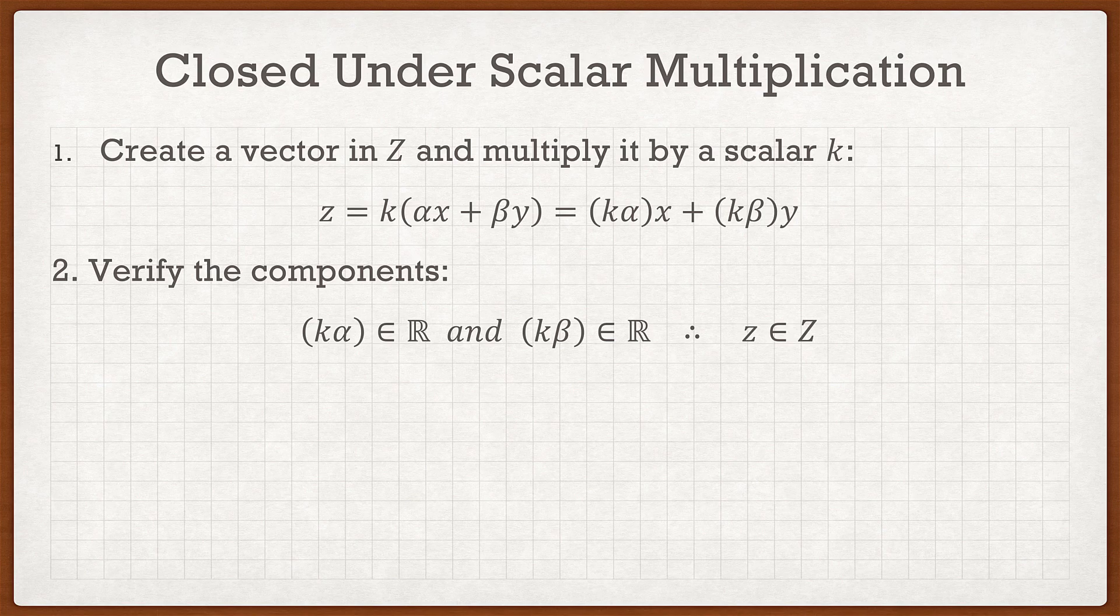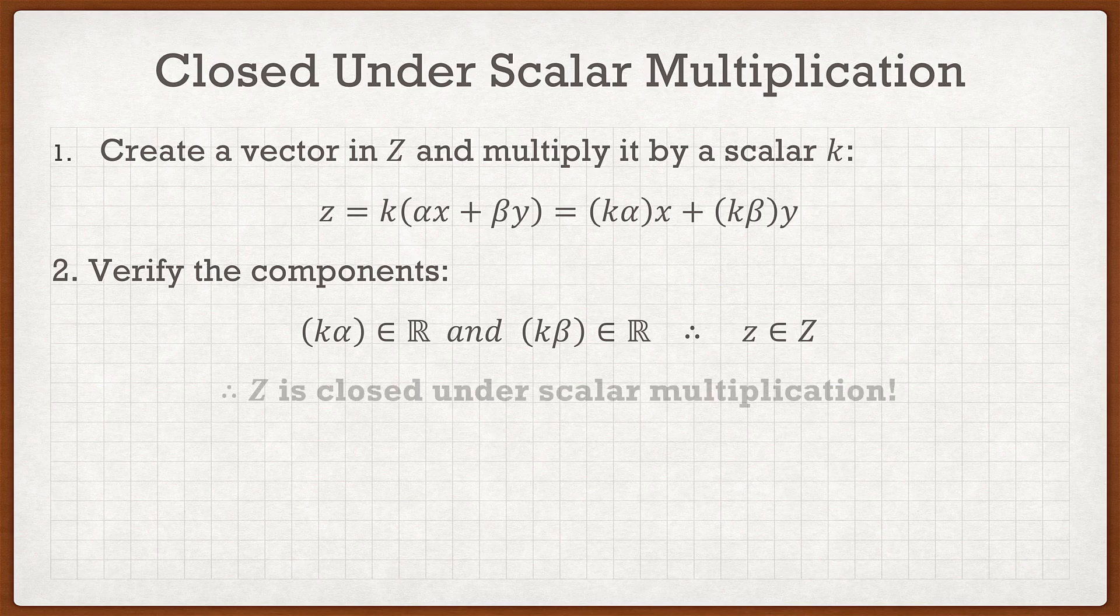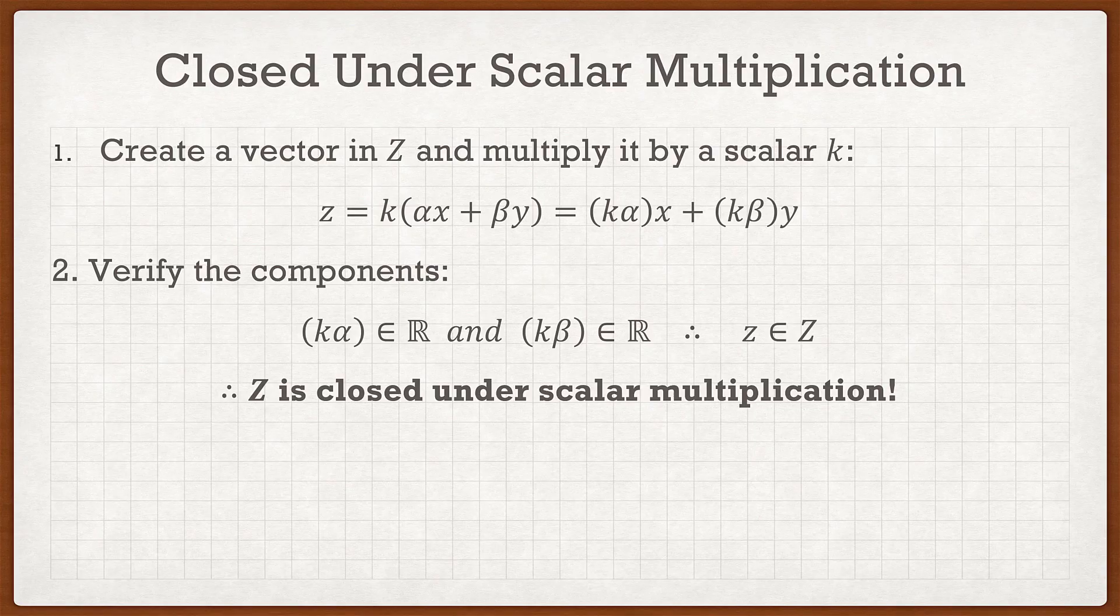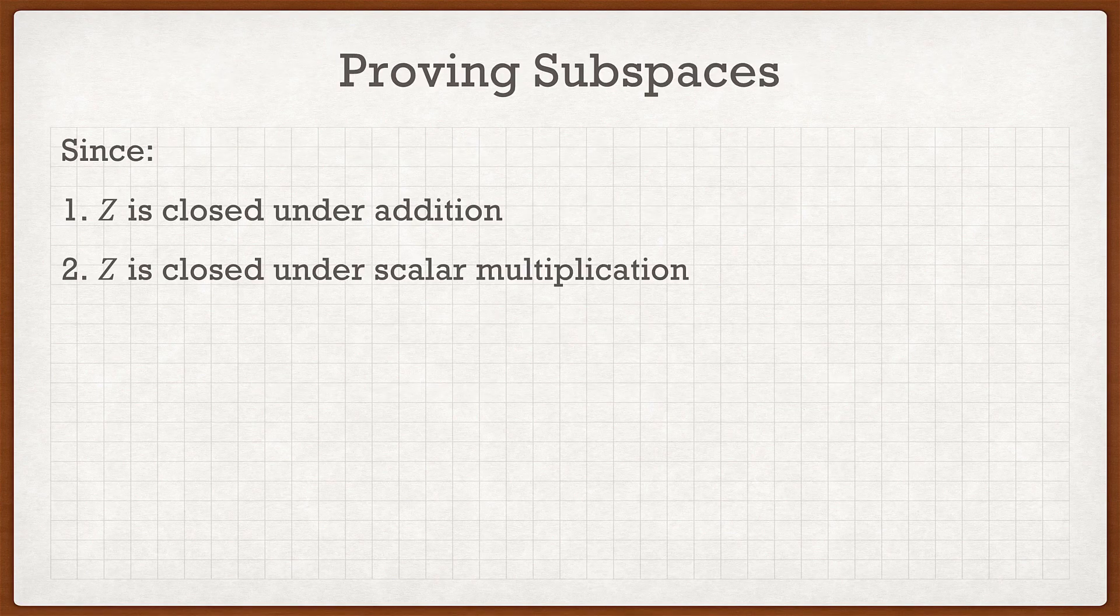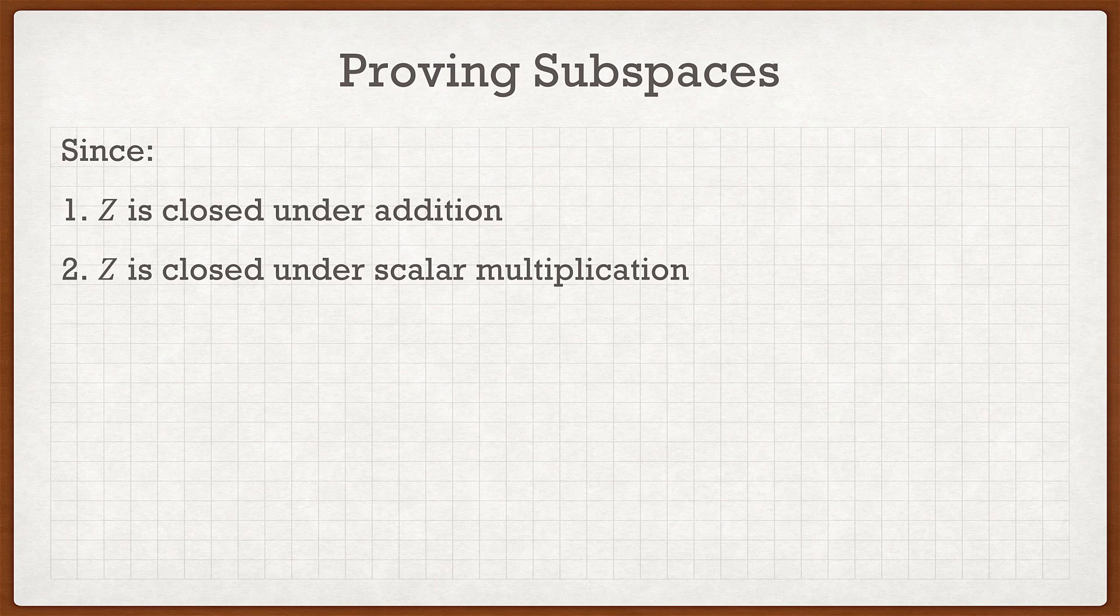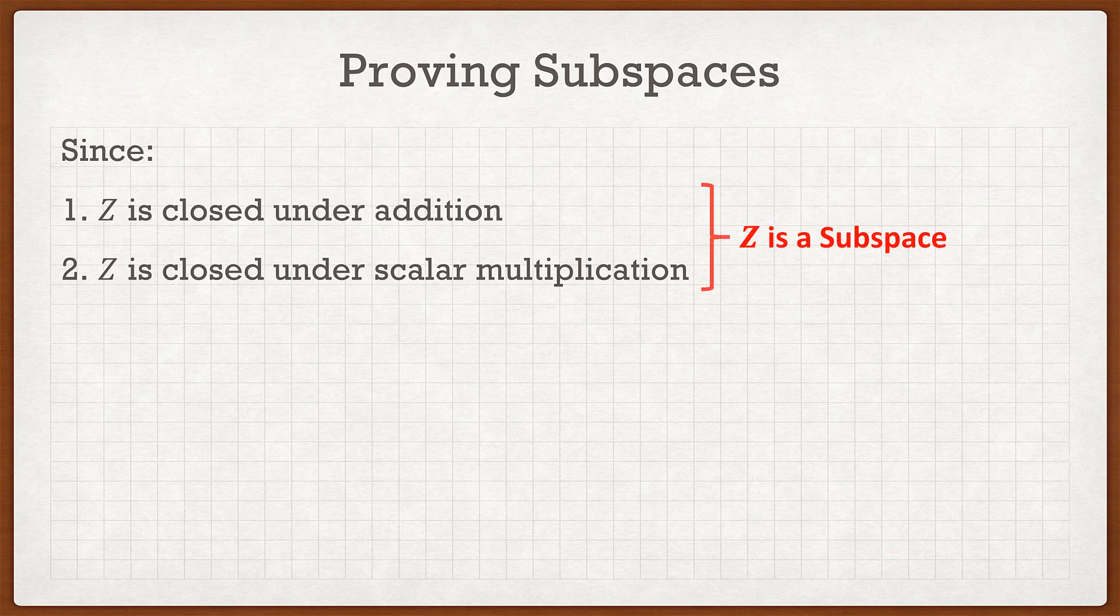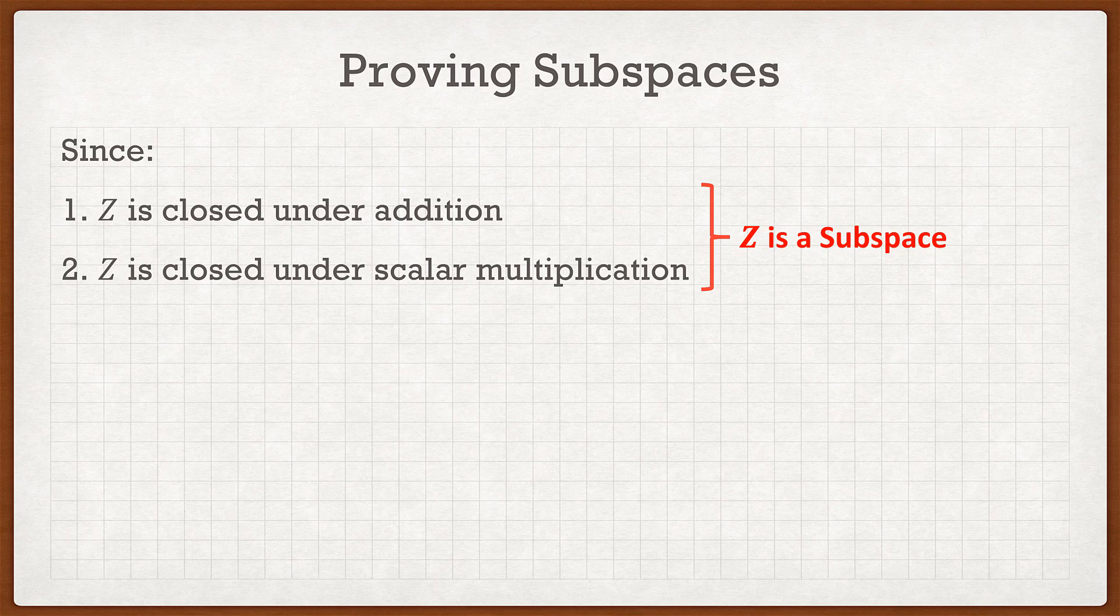And now with these I can verify them. So kα, well that must be a member of the reals, because k is a scalar and α is a member of the reals. So if I multiply them together it must also be a member of the reals. And same thing for kβ. So I can conclude from this that z is an element of big Z. And from here I can say that z is closed under scalar multiplication. Since z is both closed under addition as well as closed under scalar multiplication, I can conclude that z is a subspace.